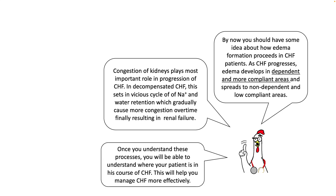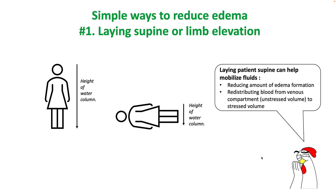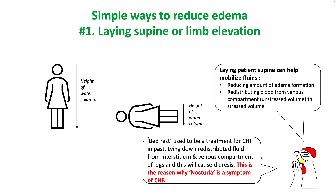Once you understand these processes, you will be able to understand where your patient is in their course of congestive heart failure, helping you manage these patients more effectively. Simple ways to reduce edema include making them lie supine or elevating the affected limb. Bed rest used to be a treatment of heart failure in the past because lying down redistributed fluid from the interstitium and venous compartment and helped with diuresis. This is one reason why you see nocturia in congestive heart failure patients.